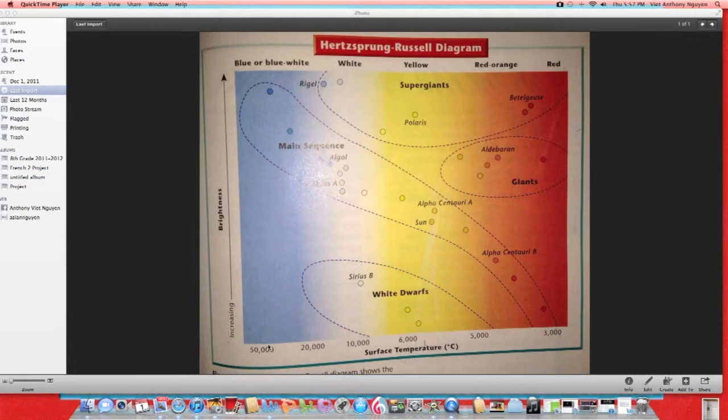The brighter slash hotter it is, the color would be approximately bright blue to white. And if it isn't so bright and hot, it would be between yellow to reddish orange to red color. So basically the colors range from bright blue, white, yellow, red-orange-ish, and red.